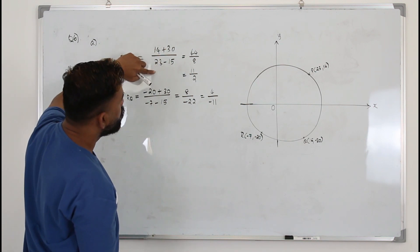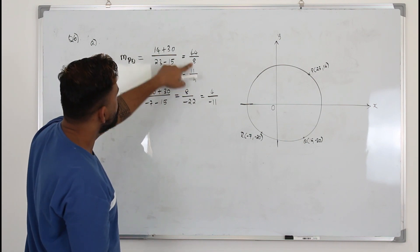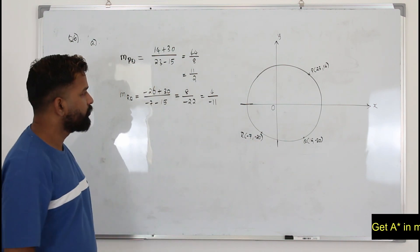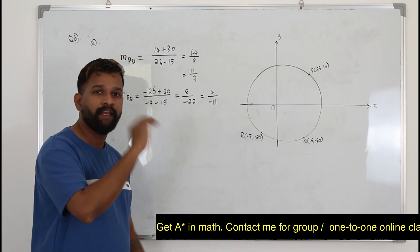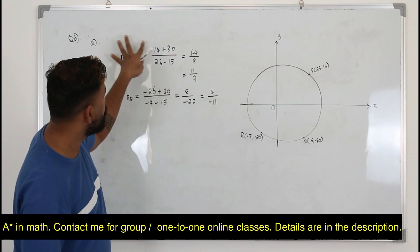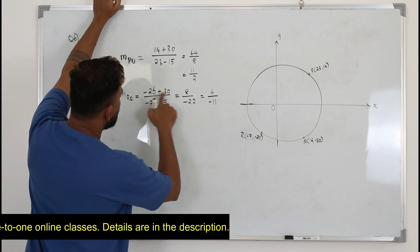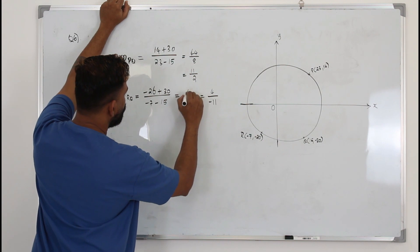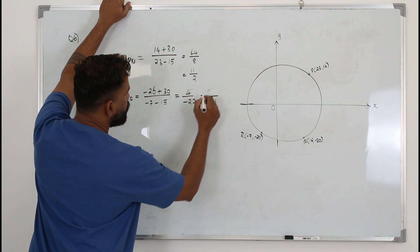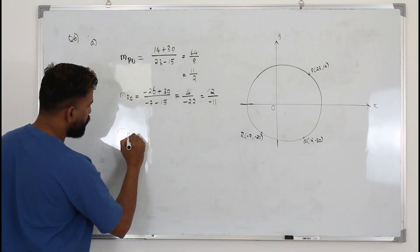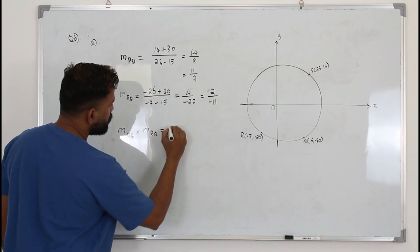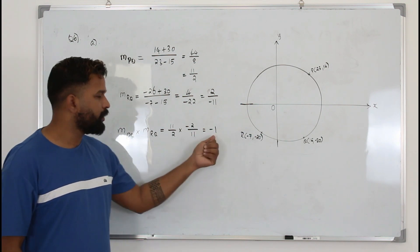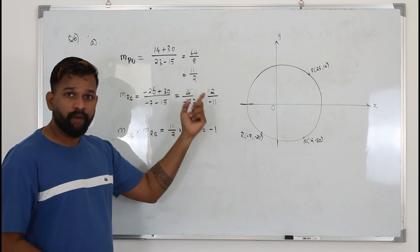Going back to check: (Y2 − Y1) / (X2 − X1) gives 44 over 8. The value here should be 26, not what was written before — making mistakes is normal, just go back and check. After correcting, it's not 68 anymore, it becomes 16, and dividing gives 2 over negative 11. Now multiplying the two slopes: slope PQ × slope RQ = (11/2) × (−2/11) = −1. When you multiply two slopes and get −1, one slope is the negative reciprocal of the other.